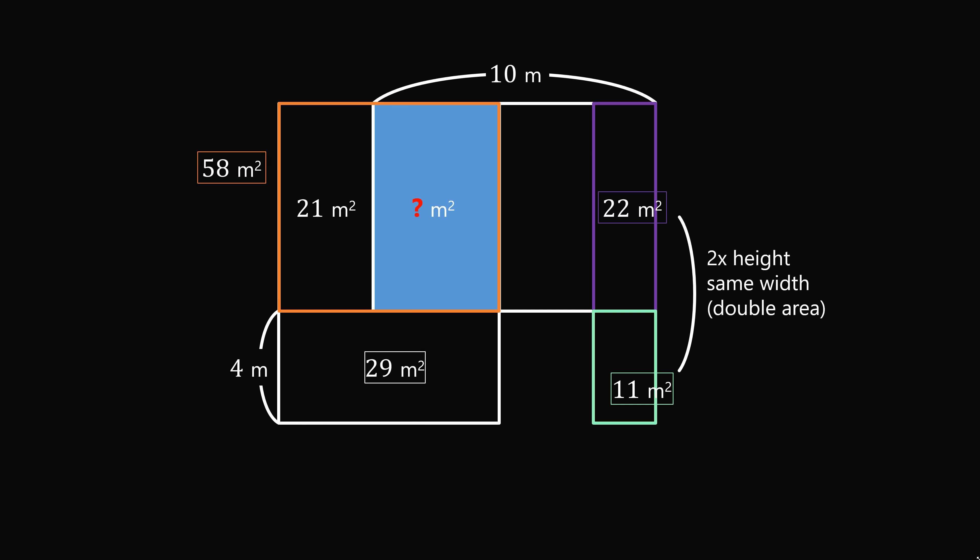Now we already know the first rectangle has area of 21 meters squared. Therefore, the unknown area is 58 minus 21, which is equal to 37 meters squared. And that's another way to solve this problem.